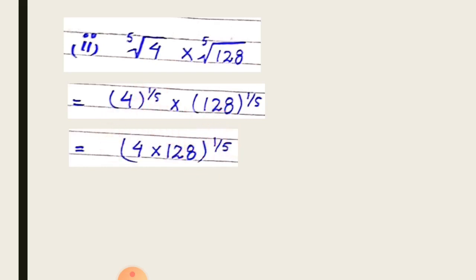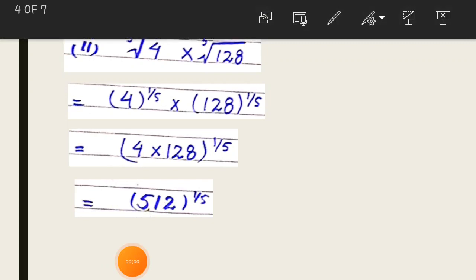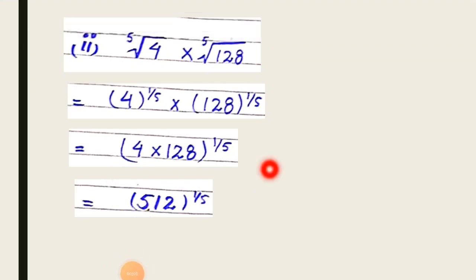So simply 1 on the whole power 1 by 5. We write it one time and multiply the bases 4 times 128. And finally we get 512 on the whole power 1 by 5. Now we have your answer in exponential form, so convert it into the radical form.